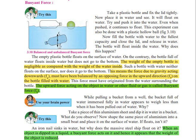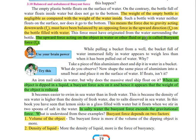लेकिन जब हमने इसके अंदर पानी फिल किया तो gravitational force जो कि downward direction में लगता है और जो buoyant force है वो upward direction में लग रहा है। तो gravitational force और buoyant force एक दूसरे के साथ balance हो गए जिसके वजह से जो bottle है वो एक certain height पे float कर रही है inside the water. अब आपने observe किया होगा कि कोई-कोई objects जो होते हैं वो पानी के अंदर पूरी तरह से डूब जाते हैं — ऐसा क्यों होता है? Because in that case जो gravitational force है वो ज़्यादा है as compared to the buoyant force which the fluid applies on that object.